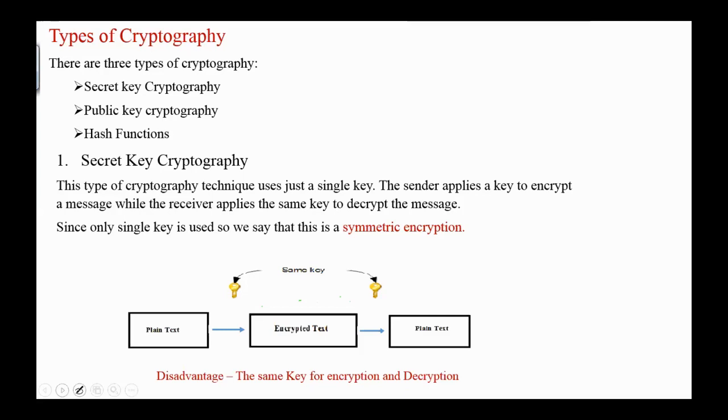First, secret key cryptography. This type of cryptography technique uses just a single key. The sender applies a key to encrypt a message, while the receiver applies the same key to decrypt the message. So the sender and the receiver both have the same key. And this is one major disadvantage of this scheme, that the same key is used for encryption and decryption. Since only a single key is used, we say that this is a symmetric encryption.